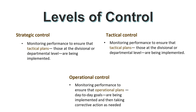There are different levels of control — strategic, tactical, and operational. Strategic control is monitoring performance to ensure that strategic plans are being implemented and taking corrective actions as needed. It is mainly performed by top-level managers who have an organization-wide perspective, which should sound familiar from discussions of strategic, tactical, and operational levels.